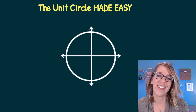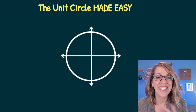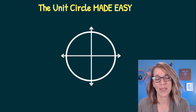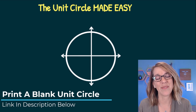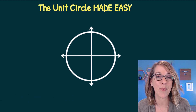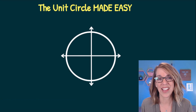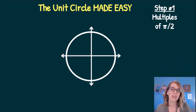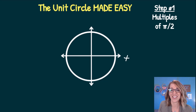Let's make understanding the unit circle and its properties as easy as possible. We're going to start by labeling all of the common angles in radians, and then we'll go back and label all of the points. This unit circle has a radius of 1, and I'm going to travel around it starting at the positive x-axis.